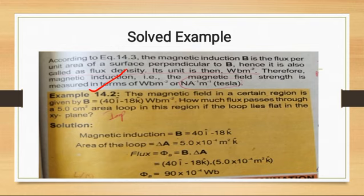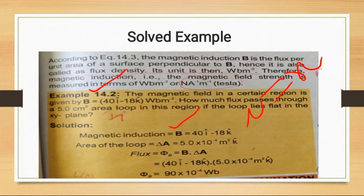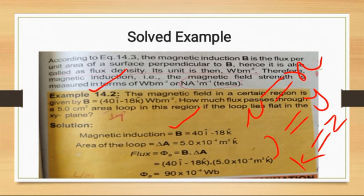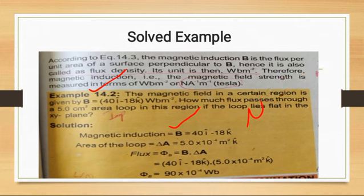Example 14.2 is very important. In this numerical, two values are given: magnetic induction B equals 40i minus 18k, where I is along the X axis, J along the Y axis, and K along the Z axis. Only two directions are given here — I and K. The area of the loop is also given. We have to calculate magnetic flux, which is B dot delta A.